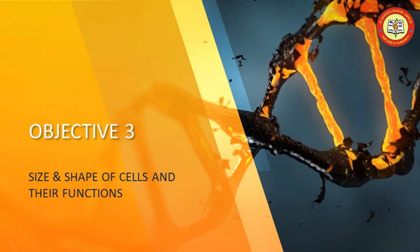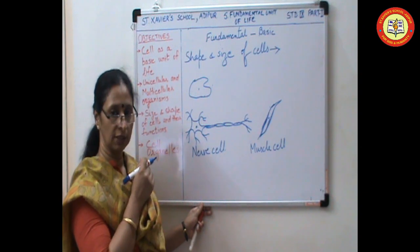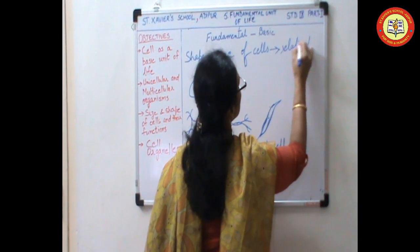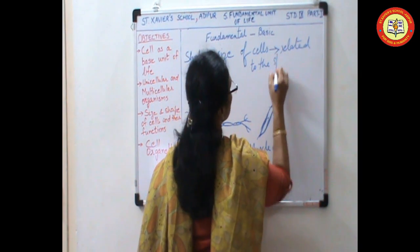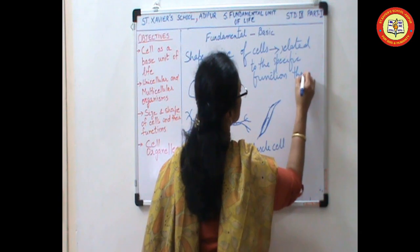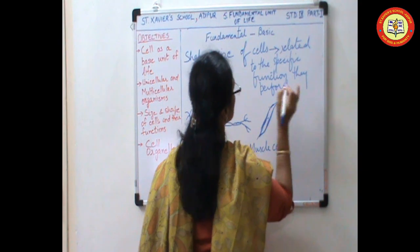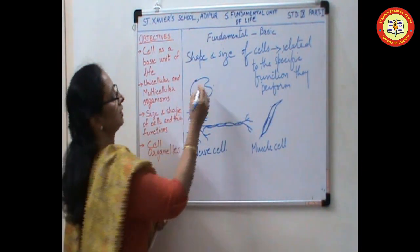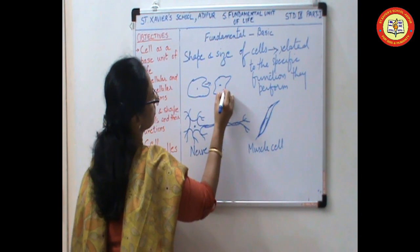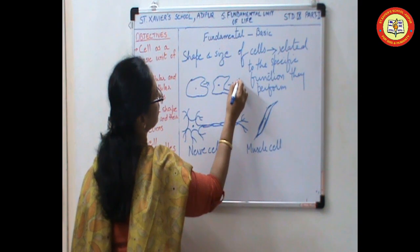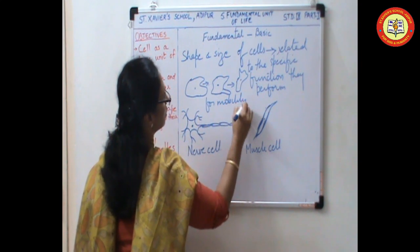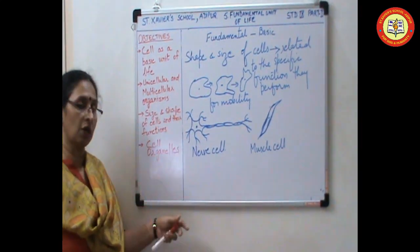Coming to shape and size of cells. Do all the cells are similar in shape and size? No. The shape and size of cells are related to the specific function they perform. For example, amoeba, the unicellular animal, amoeba keeps changing its shape for mobility.